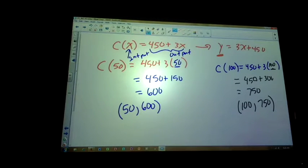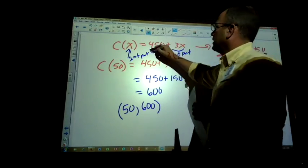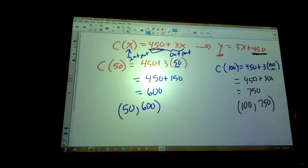450 plus 300 is 750. So in the context of the problem, if I were to make 100 candles, it would cost my company $750. Why does it only cost $150 more to make 100 candles when it doubles? It's because we have this 450. What does this 450 mean in the context of the problem?